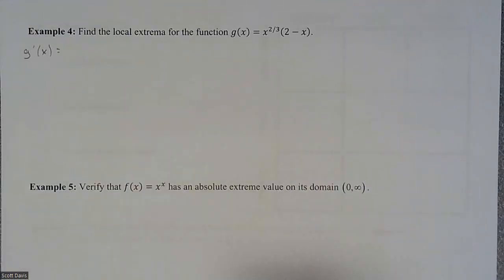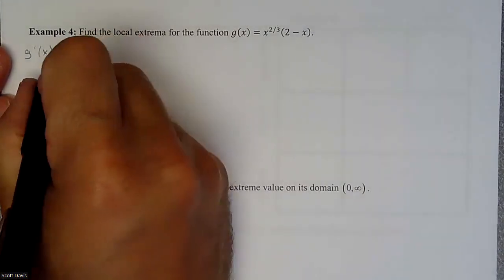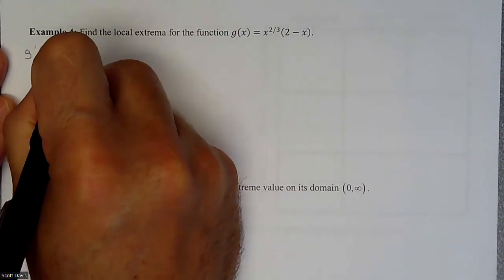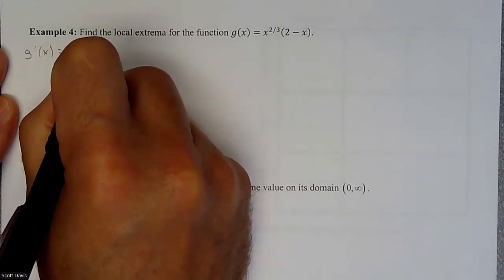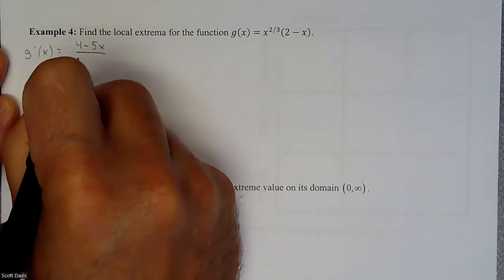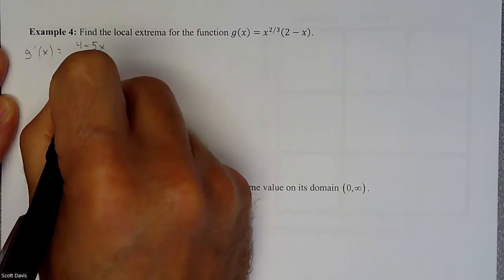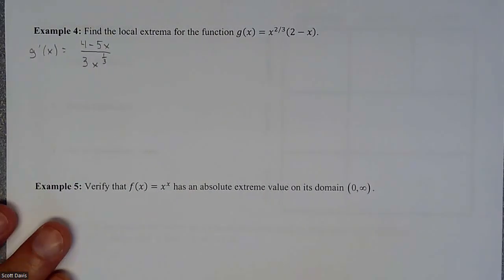So we're going to save a little bit of time and just say, here's our derivative, because we have it in a previous video. All right, so our derivative of this turned out to be 4 minus 5x over 3x to the 1/3. All right, so for us, we need to find critical numbers.